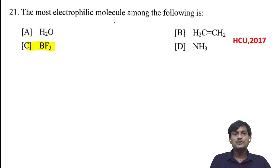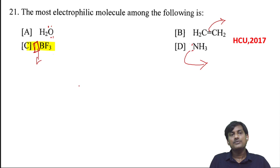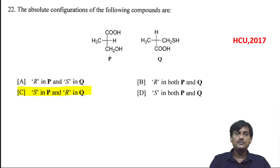The most electrophilic molecule among the following: H2O has a lone pair of electrons — it is a nucleophile. Pi electrons are also nucleophilic. A compound with a lone pair is also a nucleophile. BF3 has an empty orbital, so it can act as an electrophile. Therefore, BF3 is the most electrophilic molecule.